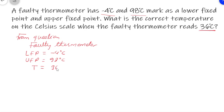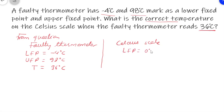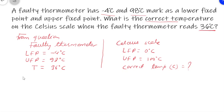We are given another scale, which is the correct Celsius scale. On the Celsius scale, the lower fixed point is 0 degrees Celsius and the upper fixed point is 100 degrees Celsius. We need to find the correct temperature C in the Celsius scale.